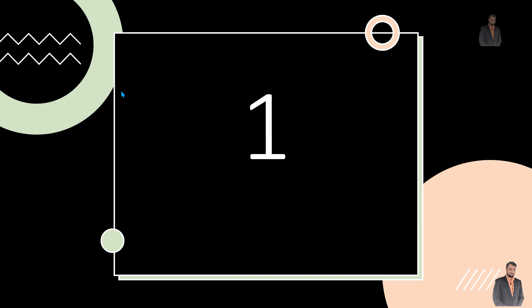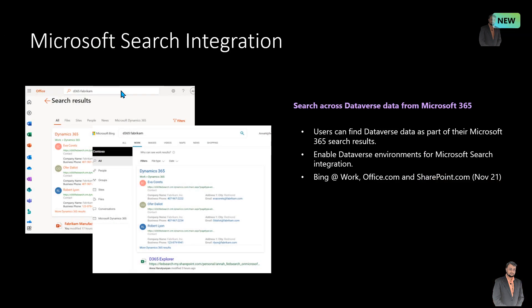The first feature which is available at this moment is Microsoft Search Integration with Dataverse. Now we can search Dataverse data as part of Microsoft 365 Search Results. In order to enable this, you need to enable the Dataverse environment for Microsoft Search Integration.